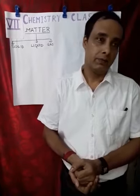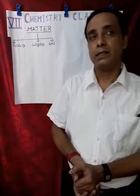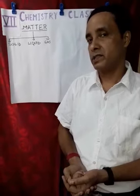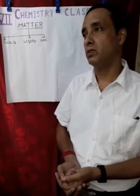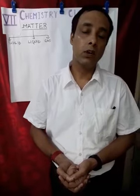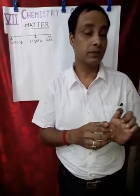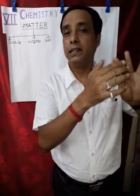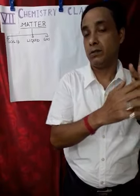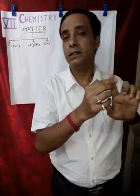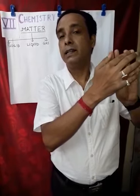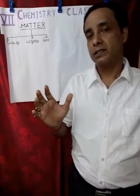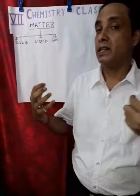In olden times, Greek philosophers and Indian philosophers were of the view that matter is composed of five different elements: sky, earth, water, air, and fire. These were the perceptions in olden times regarding matter.